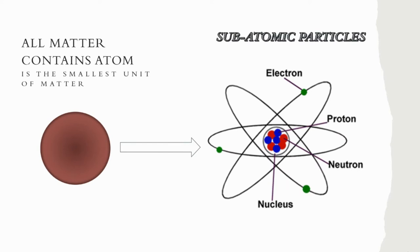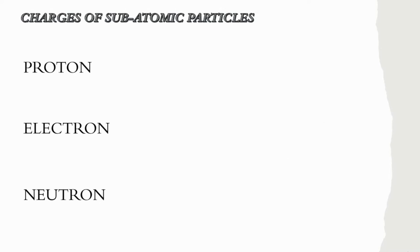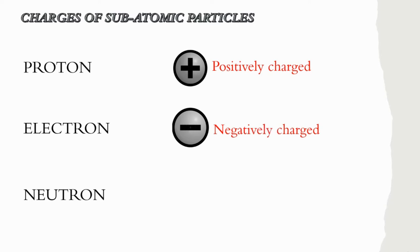We know that all matter consists of atoms, and atoms consist of subatomic particles such as electron, proton, and neutron. Electron has negative charge, proton has a positive charge, while neutron is no charge or neutral. Remember, a matter with equal amount of positive and negative charges is said to be neutral or no charge at all.